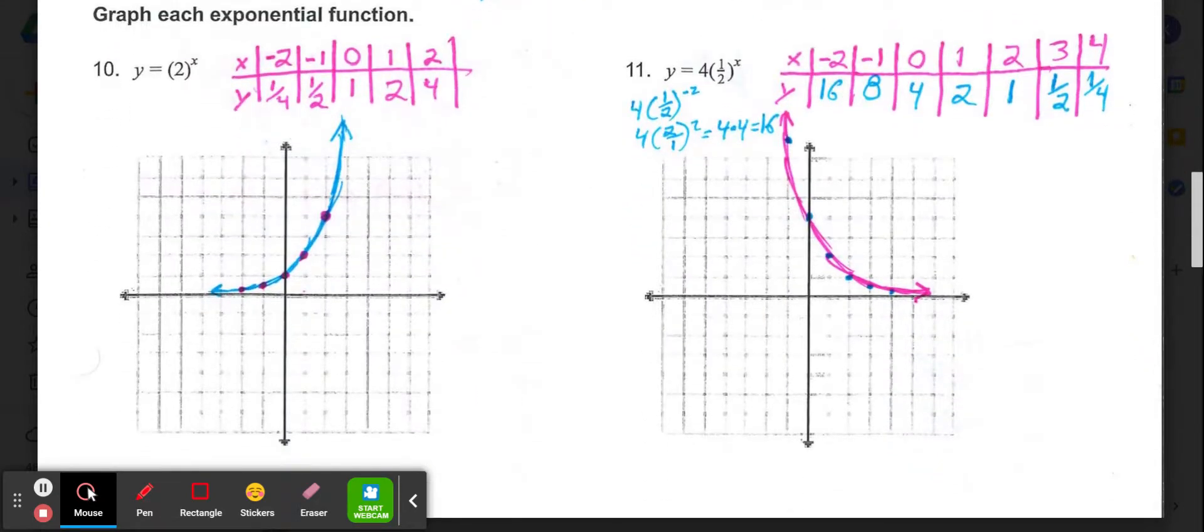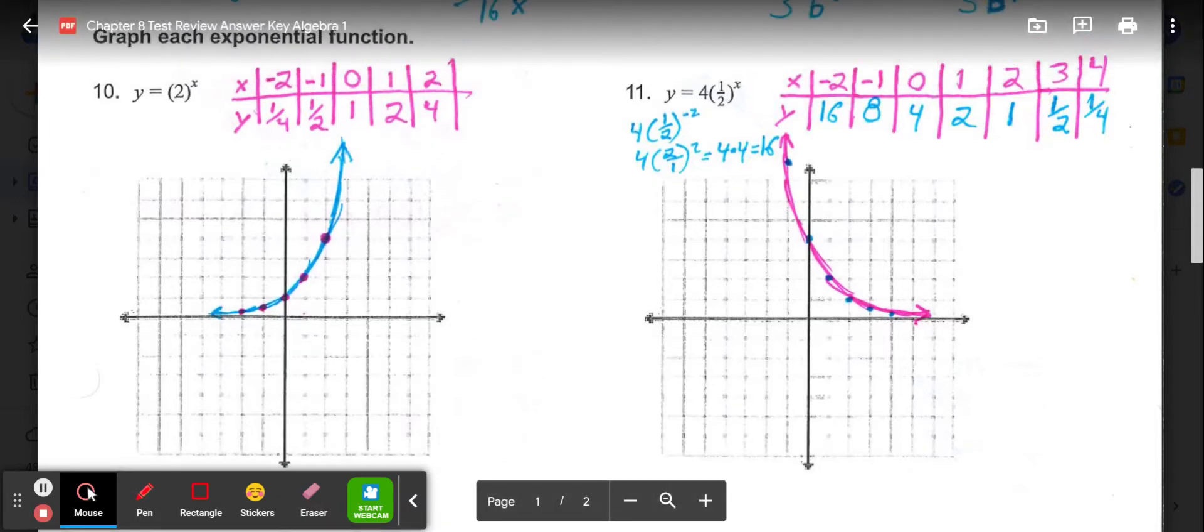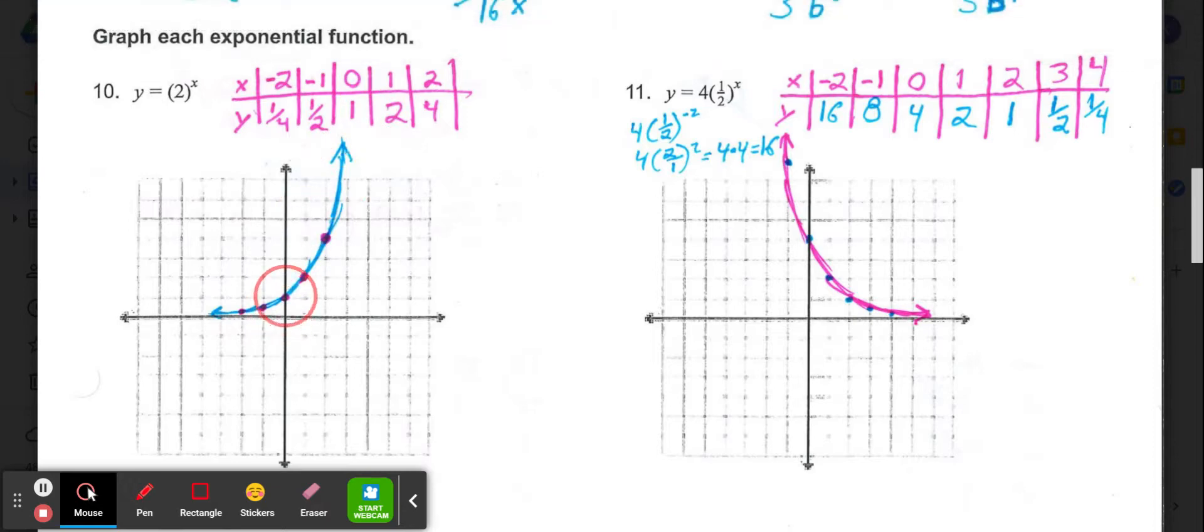Now for numbers 10 and 11, we are graphing exponential functions, meaning our final graph is going to be a curve. And my recommendation, as always, is to put at least 5 numbers in for x to get your y values to start to graph the curve. So what I started with in this first one, y equals 2 to the x power, I'm going to use 0, 1, 2, and negative 1 and negative 2 to put in for x. So you would do 2 to the 0 power, which is 1. So my first point would be over 0, up 1.